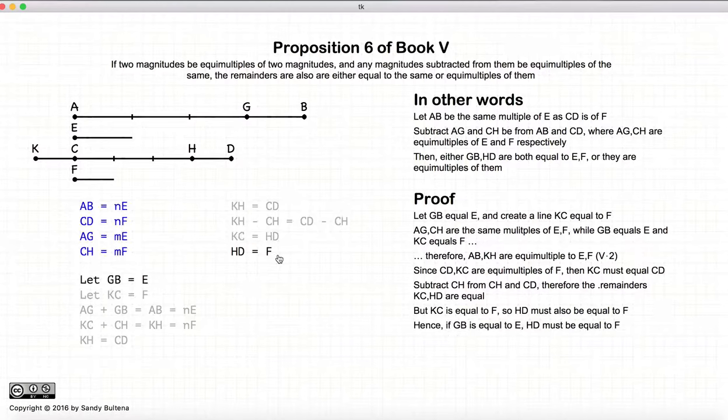So here we have shown that if we start with the assumption that GB is equal to E, then HD has to be equal to F.